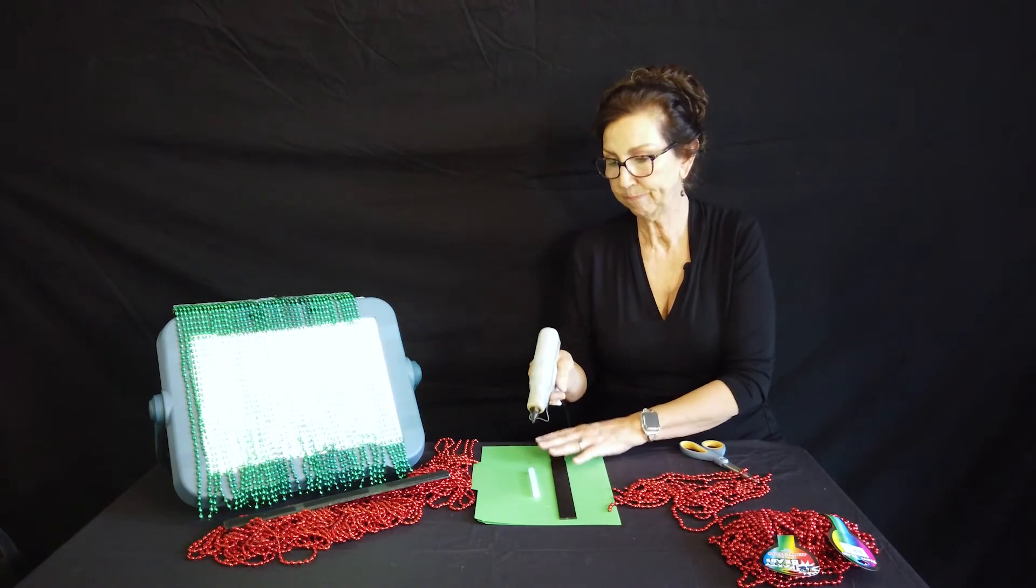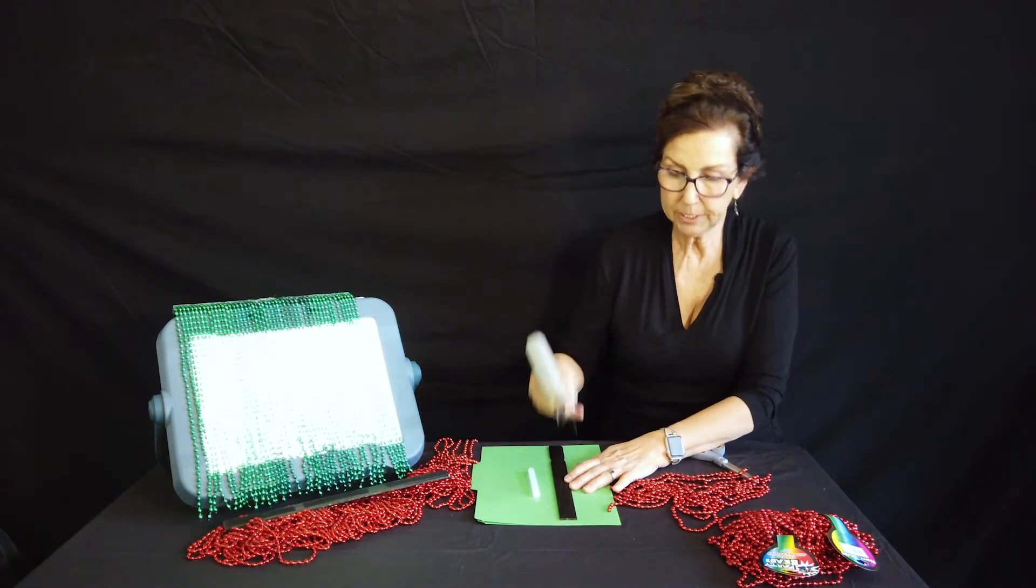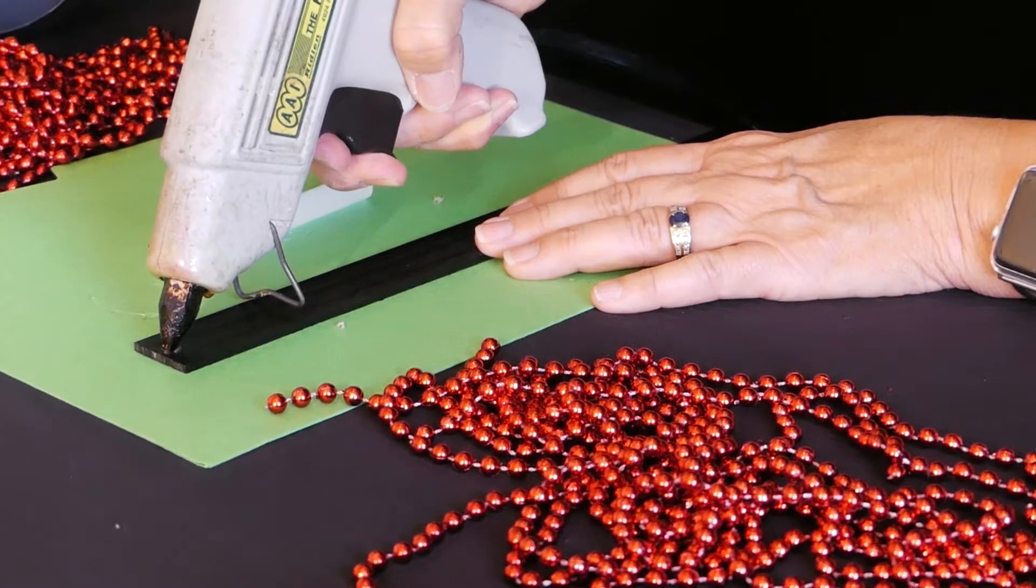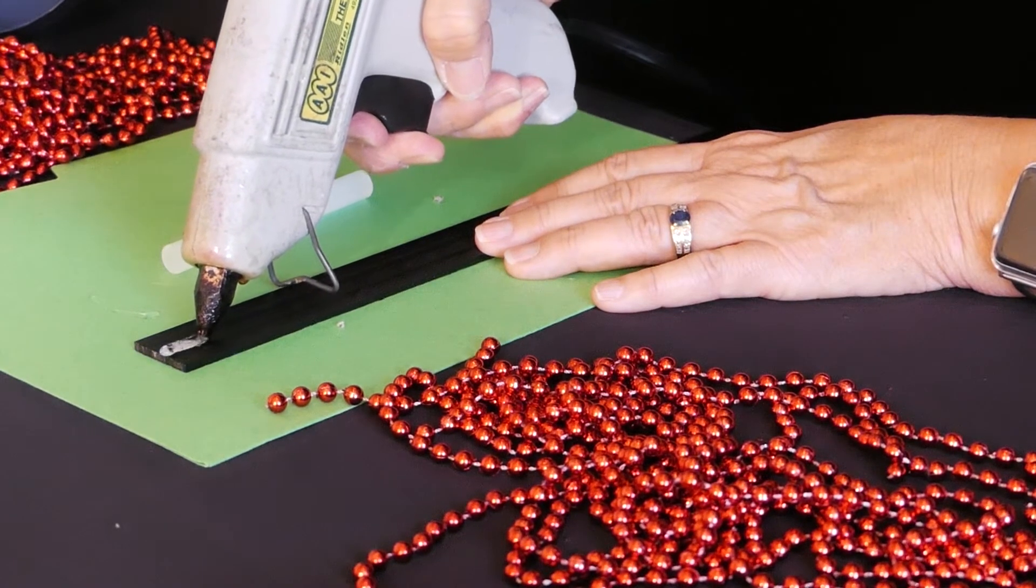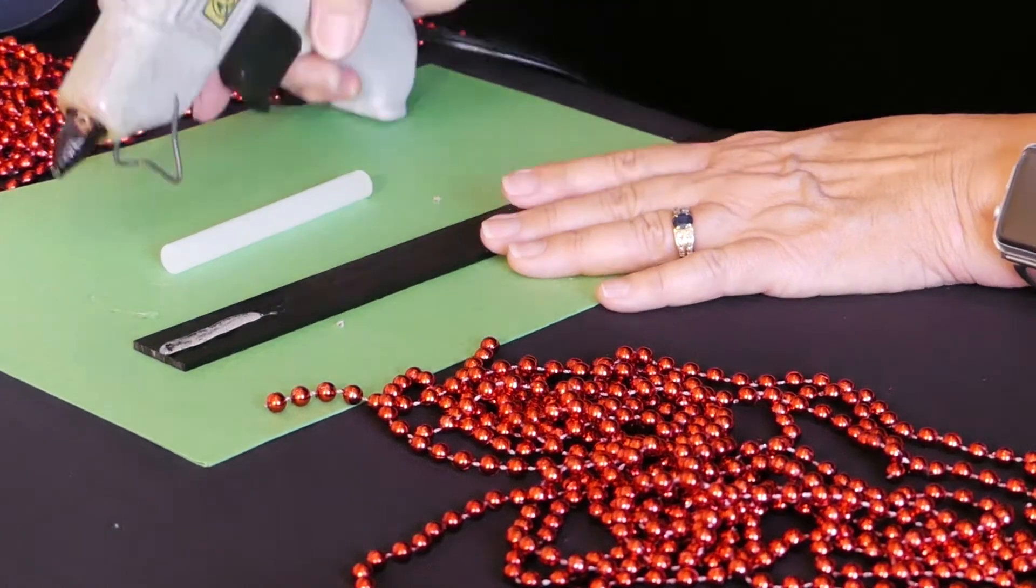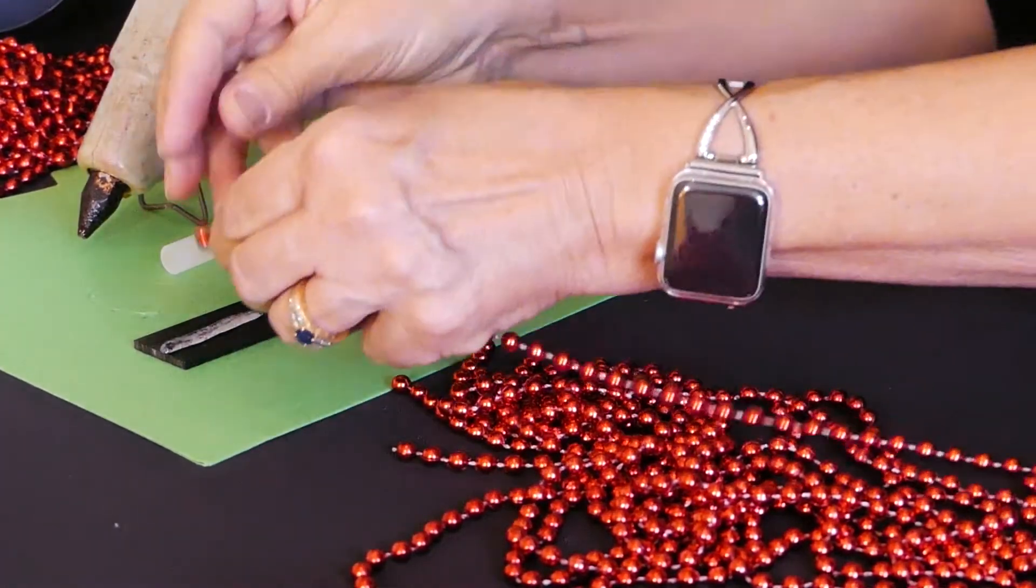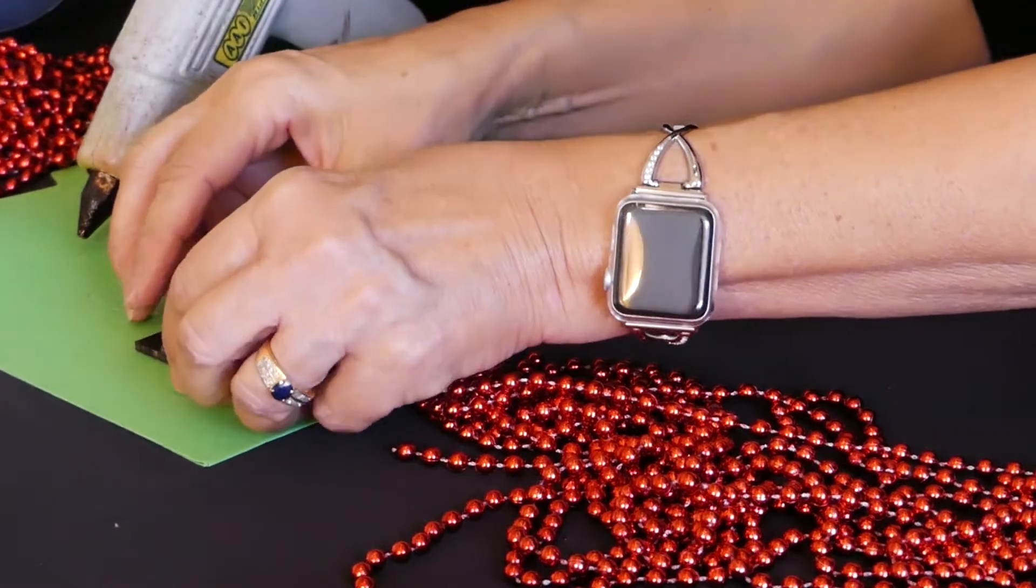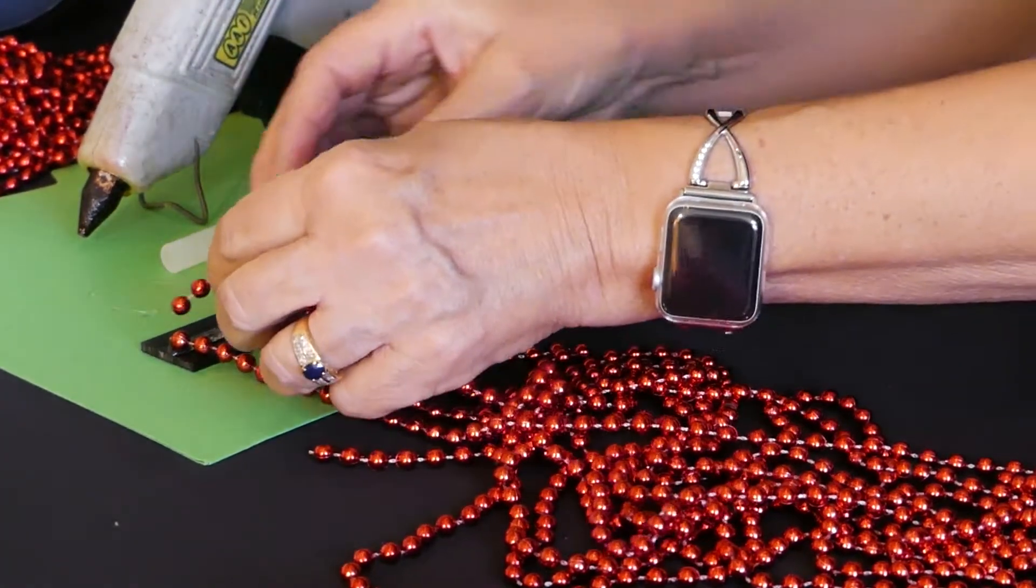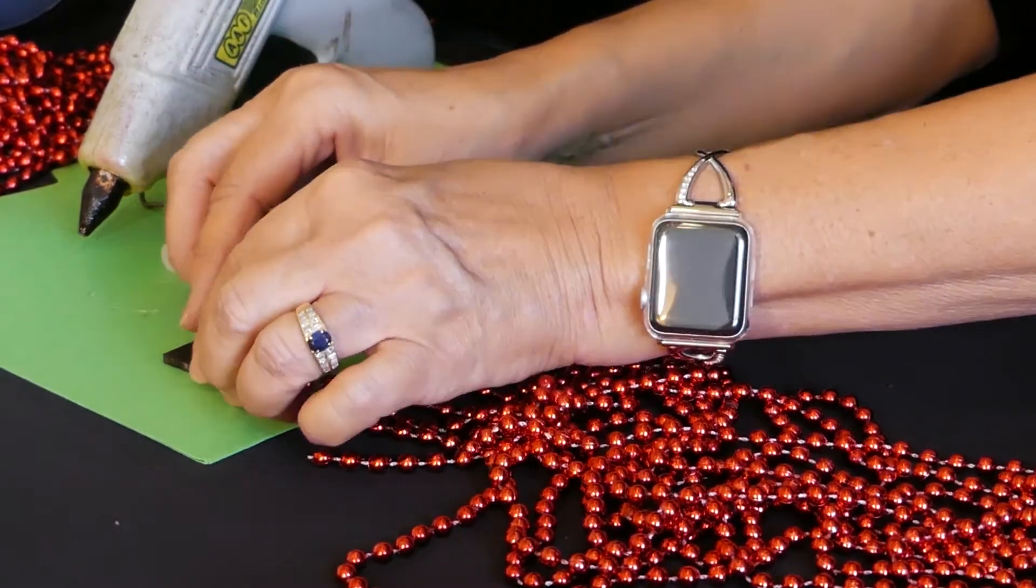And then you take your hot glue gun and I only do about an inch at a time. So I'm going to just put about an inch of hot glue in the very center of this stick. And I've got my beads all pre-cut and ready. And we stick them on.